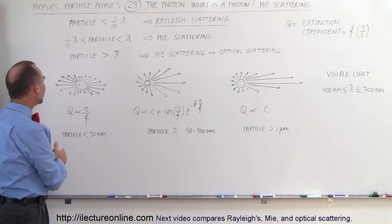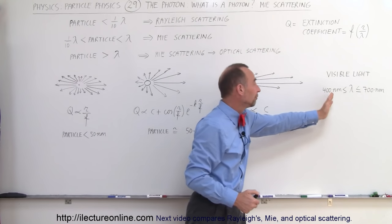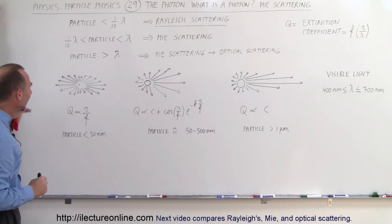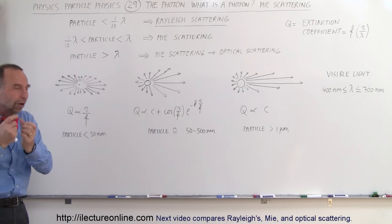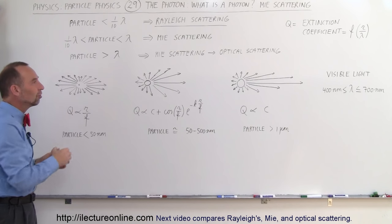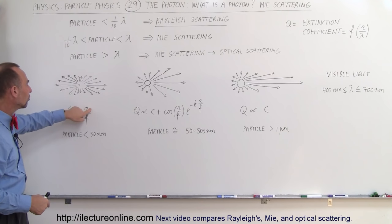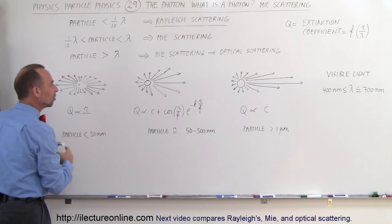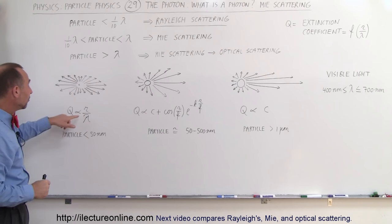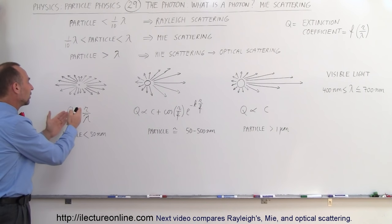When it comes to Rayleigh scattering, when the particle is less than 50 nanometers — because the wavelength of visible light is somewhere between 400 and 700 nanometers, so we take a tenth or less than a tenth of that — we're talking about very small particles like air molecules. When light is incident on that, a significant amount is scattered, and the extinction coefficient, how much the light is scattered, is simply proportional to the radius of the particle divided by the wavelength. If the particles get bigger, the amount of light scattered is bigger as well, so it's definitely a function of the size of the particle relative to the wavelength.